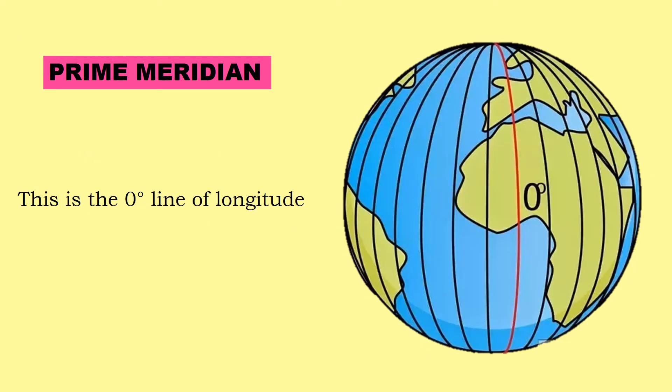The 0 degree line of longitude is called the Prime Meridian. This line passes through Greenwich in England. East and west from the Prime Meridian, the Earth is divided from 0 degrees to 180 degrees.